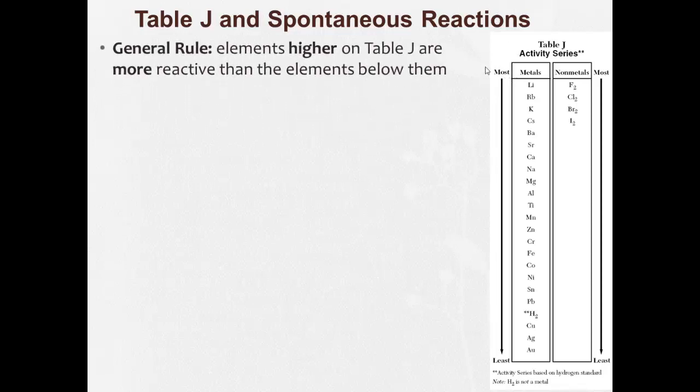So the general rule: elements higher on Table J, more active, are more reactive than elements below them. So if the most active is up top, these are more reactive. The least active on the bottom, these are the least reactive.